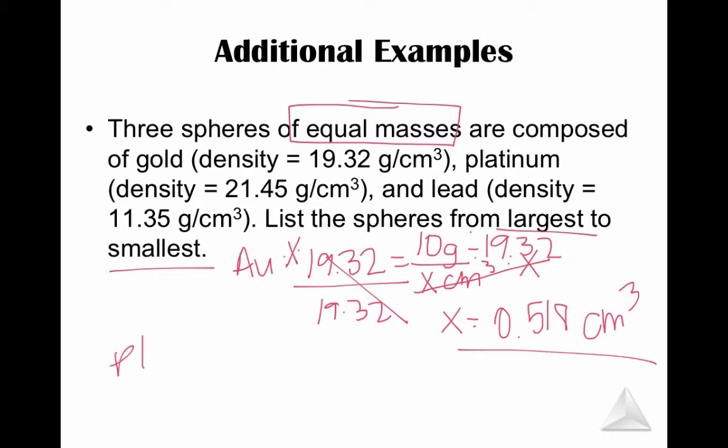So if you solve the other ones the same way, solve platinum, solve lead. What you're going to find when you put them in order is that the largest is lead, then gold, then platinum. So these last few examples are the types of density problems that you will see. You will also have to use density in stoichiometry problems. Can you use density to go from mass to volume or volume to mass? Density is a conversion factor. You have to be able to use it.